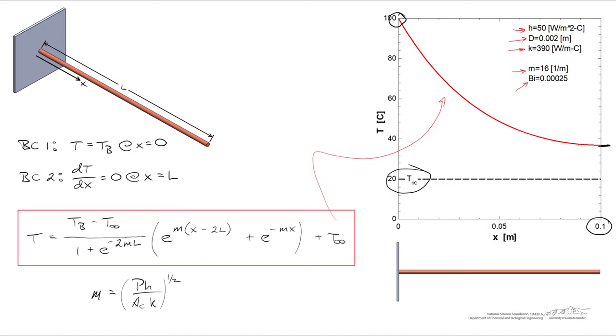And there's one other thing to point out: it predicts a decreasing temperature, the concavity is upward like what we would have expected, but the temperature difference between the tip of the fin and the ambient temperature is about 20 degrees C.